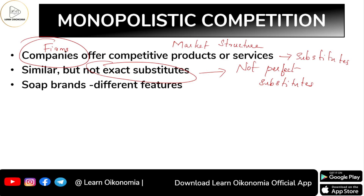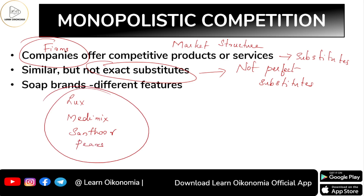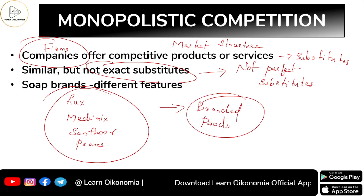To give an example of a monopolistically competitive market structure, take the case of soap brands in India. You have brands like Lux, Medimix, Santoor, and Pears, among others. These soap brands offer different varieties of features — so though all these companies are producing soaps, they are producing different branded products.